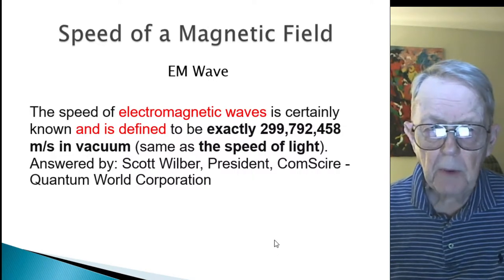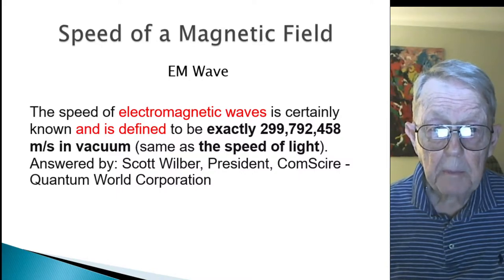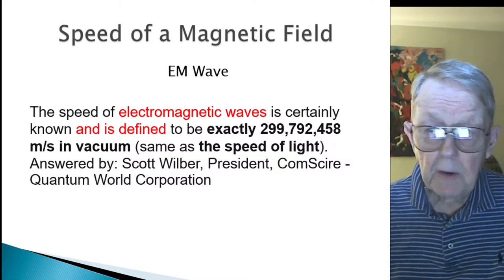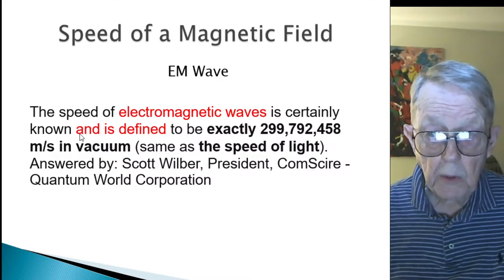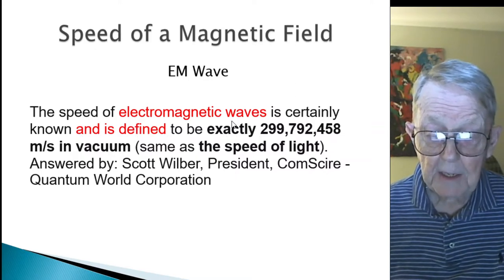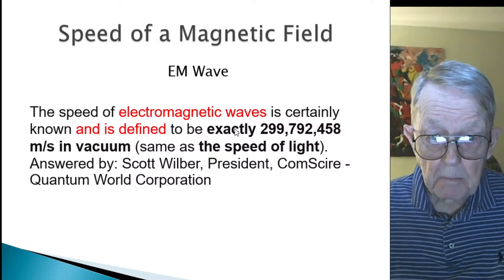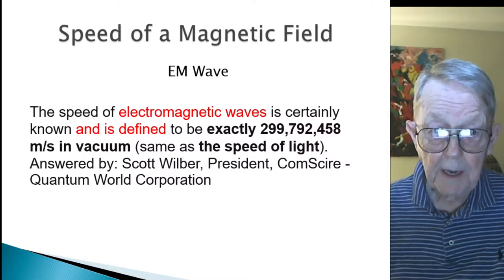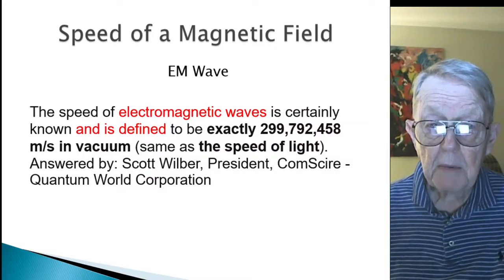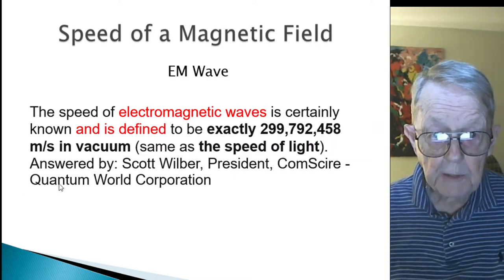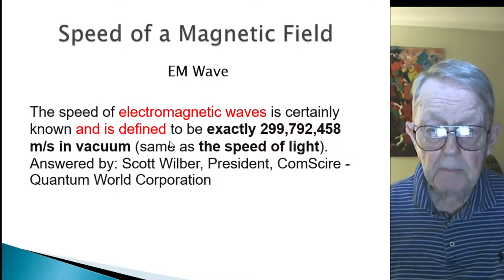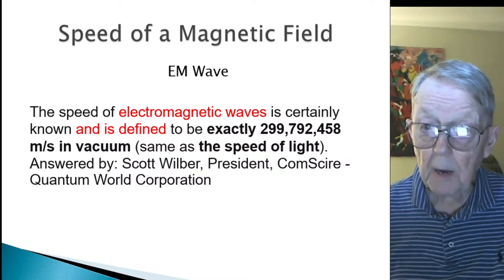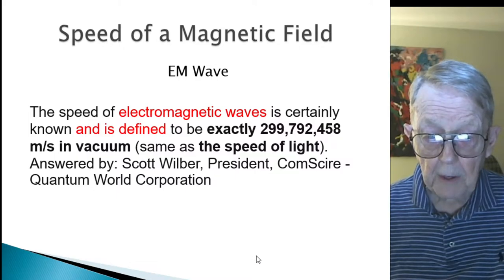Let's look up and see what they say about the speed of a magnetic field. So I looked that up, and first answer, they talk about the electromagnetic wave, EM wave. The speed of the electromagnetic wave is certainly known and is defined as exactly 299,792,458 meters per second in a vacuum, the same as the speed of light. This was an answer by Scott Wilbur, president of ComScree, Quantum World Corporation. I don't know who that was, but that was the top answer when I looked it up on the internet. It's defined, not measured, defined, but he's talking about electromagnetic waves.